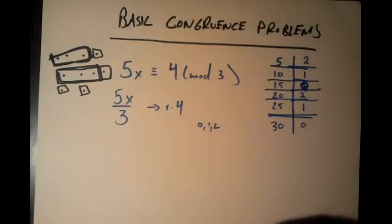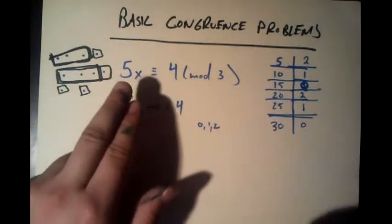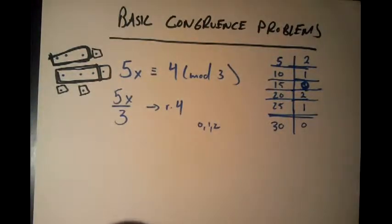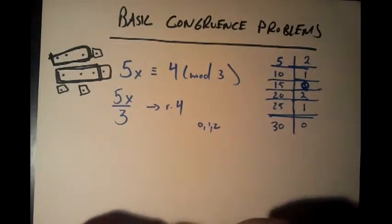We're going to be talking about some basic congruence problems based off information in the first congruence video. So this is the problem: 5x is congruent to 4 modulo 3. We want to find some x for which that works.